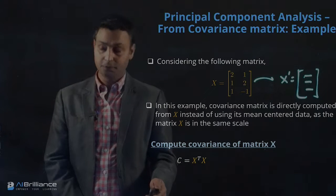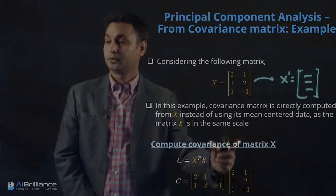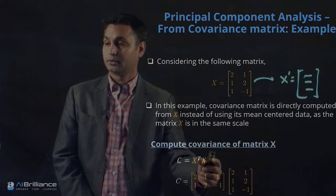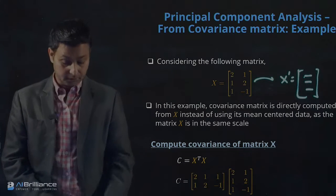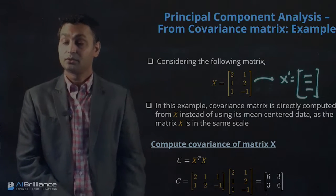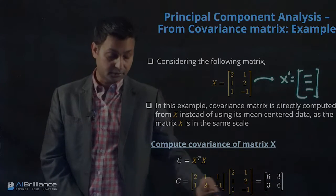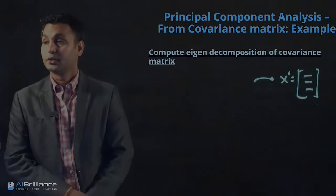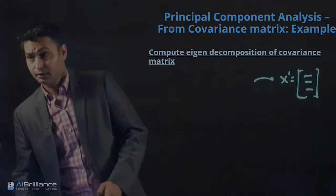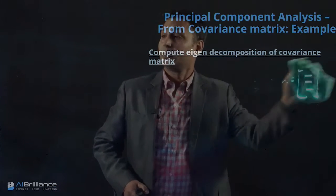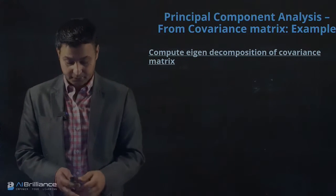So C will be X transpose multiplied by X. Taking the multiplication of those two matrices, C comes out to be the matrix with values 6, 3, 3, 6 — those are the two rows of the C matrix. Then what we can do is perform the eigenvalue decomposition of this C matrix, as we have talked about in previous lectures.